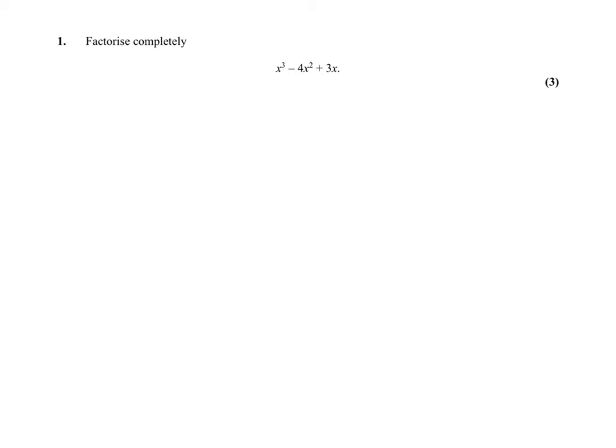Question 1: I'm not going to say a lot about this. Notice there is an X in each of them, so factorize first, factorize out an X. You should get something like this, and then that should factorize neatly into two brackets.